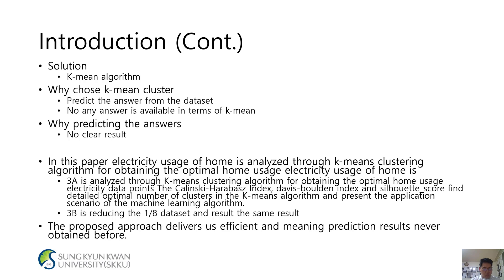Electric car data points. The Calinski-Harabasz index, Davies-Bouldin index, and silhouette score find the detailed optimal number of clusters in the K-means algorithm and present the application scenario of the machine learning algorithm. Project 3B reduces the dataset and yields the same result. The proposed approach delivers efficient and meaningful prediction results never obtained before.